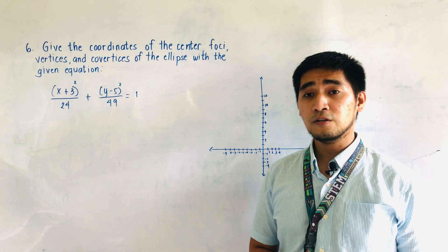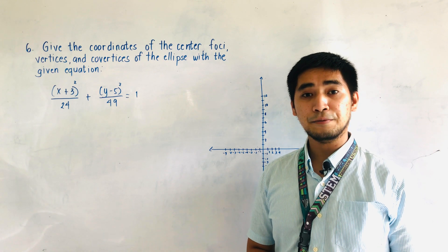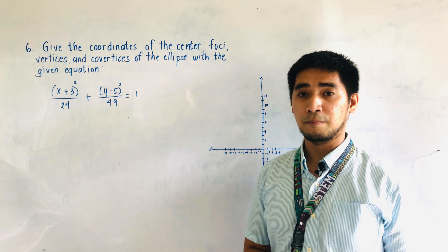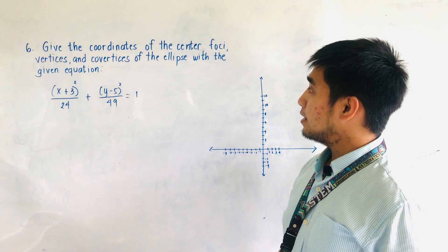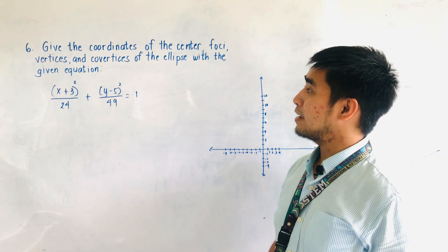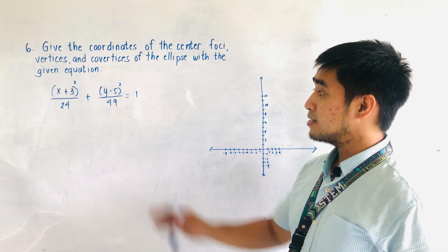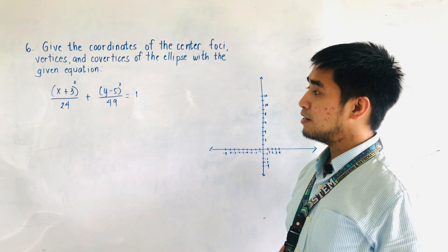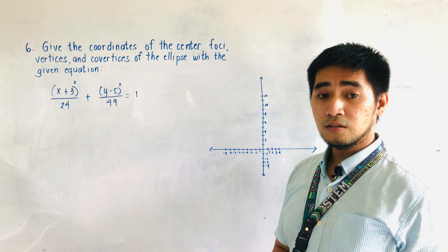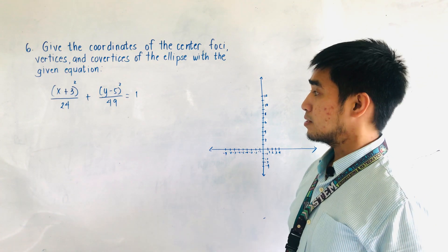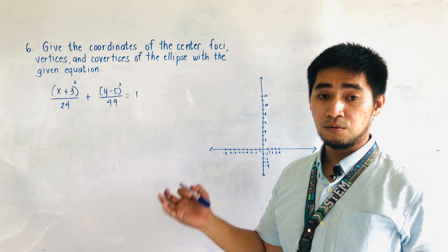Today, we will continue what we discussed last time. We now have problem number 6. For problem number 6, we are asked to give the coordinates of the center, the foci, the vertices, and co-vertices of the ellipse with the equation: x plus 3, quantity squared, all over 24, plus y minus 5, quantity squared, over 49, is equal to 1.